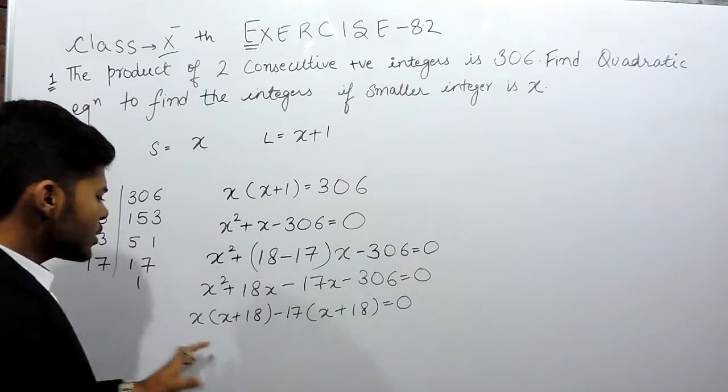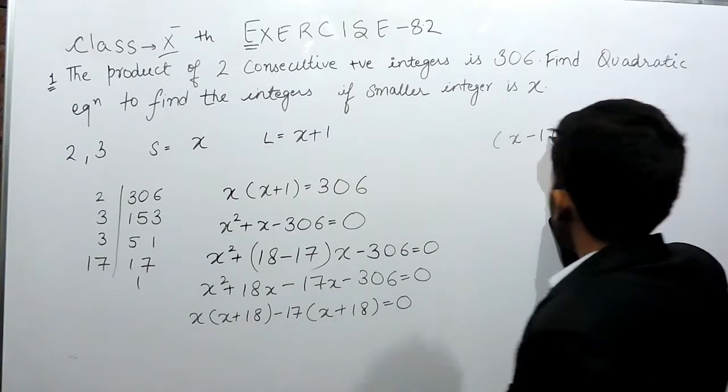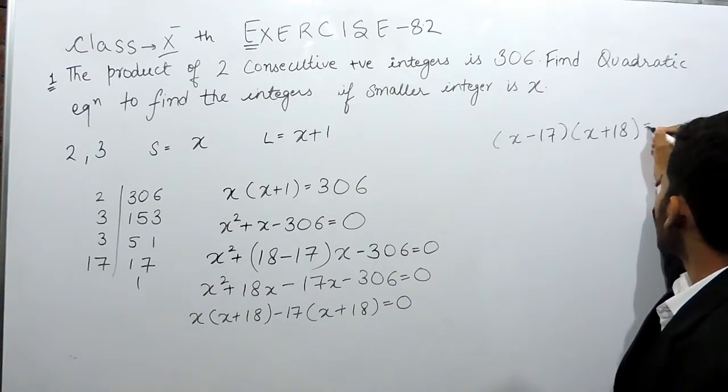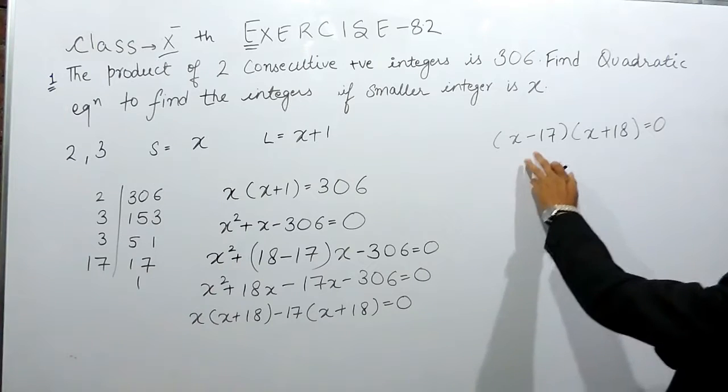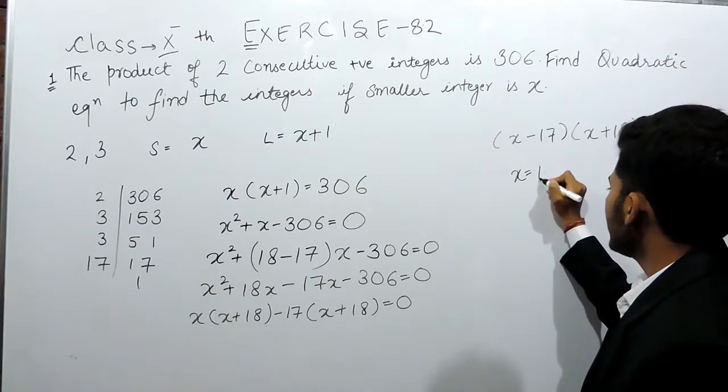Taking common, this will be x times (x minus 17) and x plus 18 equals 0. So we will get the value of x and we will have 2 values of x. So x will be equal to 17, the first value.